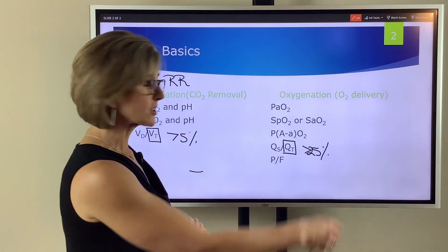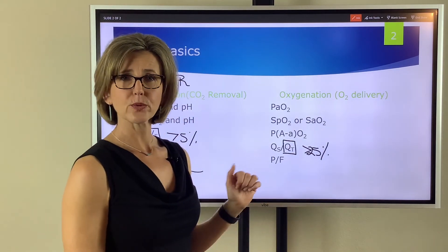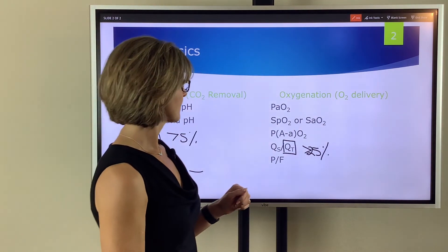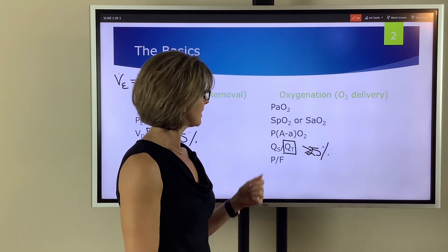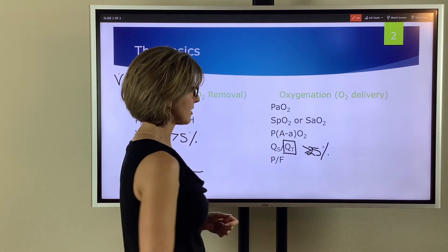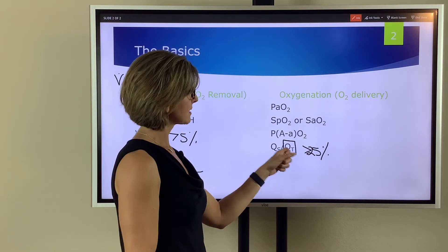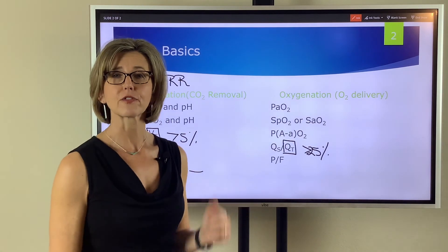When we're looking at oxygenation we can look at the PaO2, the pulse ox saturation, or the blood gas saturation. We can also look at A to A difference, physiologic shunt and again when we're talking about physiologic shunt that is the percentage of cardiac output that is not oxygenated, and the PF ratio.